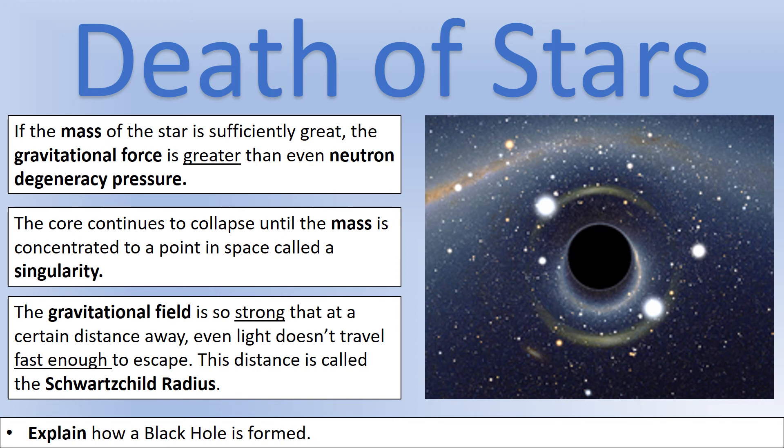So around the singularity, because we've got such high density, we have a massively strong gravitational field. And as part of the gravitational field's topic, you'll have learned to calculate escape velocity, which comes from essentially working out the kinetic energy required to escape. So at a certain distance away from a black hole, the escape velocity becomes greater than the speed of light. And that's something called a distance called the Schwarzschild radius there. That's when the escape velocity becomes greater than the speed of light.